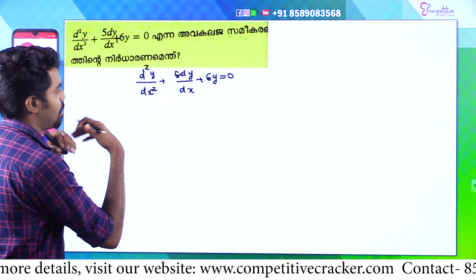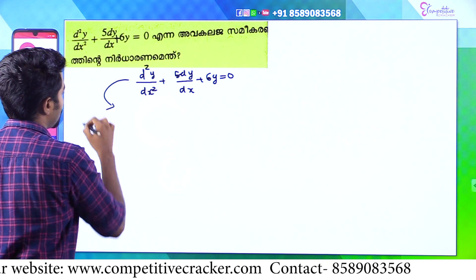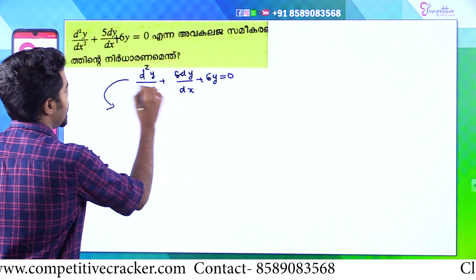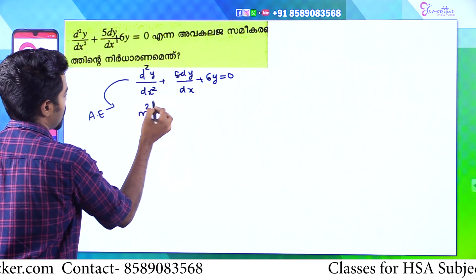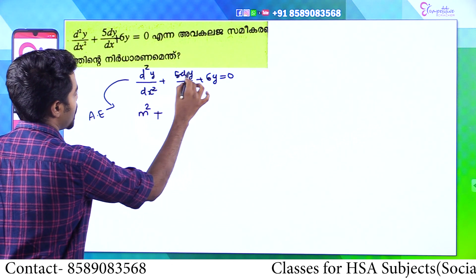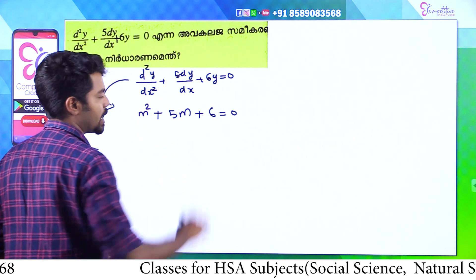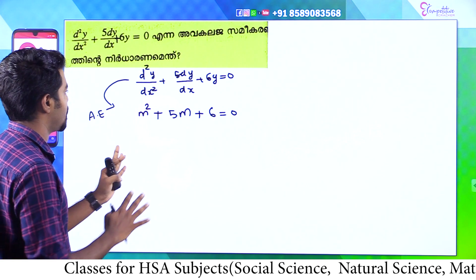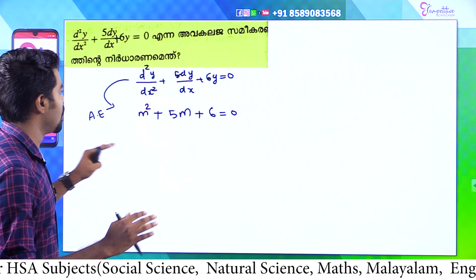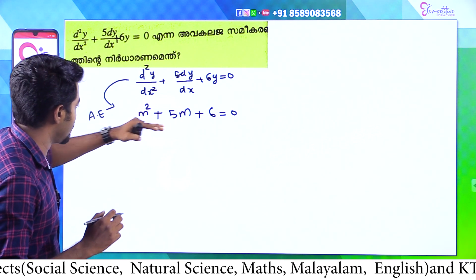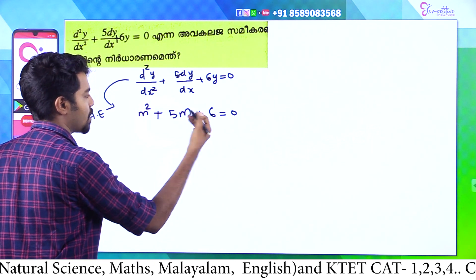I have to write the equation: d²y/dx² plus 5 dy/dx plus 6y equals 0. First of all, we have a symbolic form — the auxiliary equation. We have to learn the pattern. This is the auxiliary equation. We have to learn: d²y/dx² becomes m², and 5 dy/dx becomes 5m, so m² plus 5m plus 6 equals 0. If we see in this equation, m² plus 5m plus 6 is equal to 0. It is a second-degree equation.